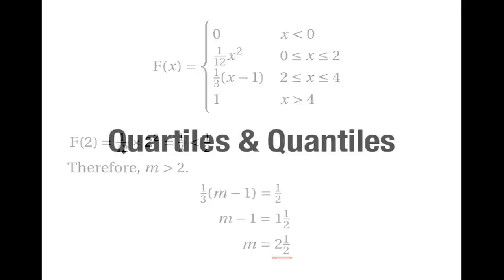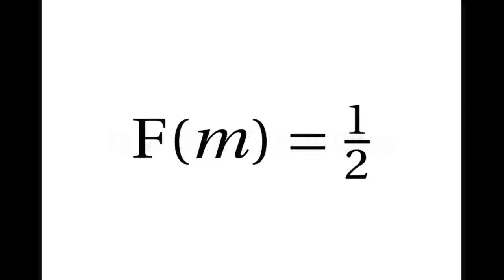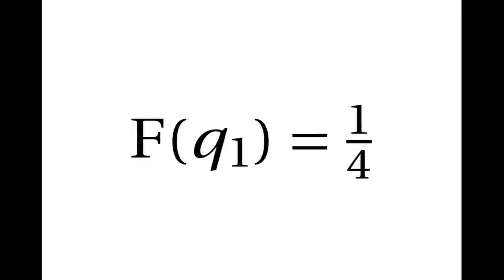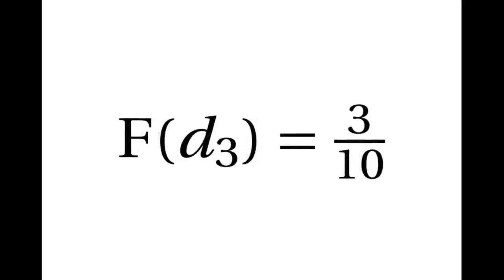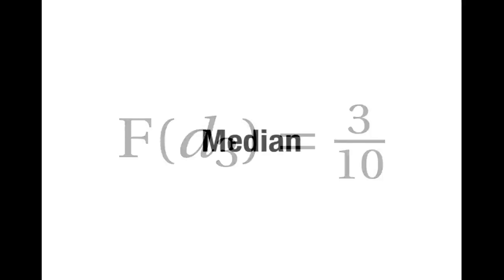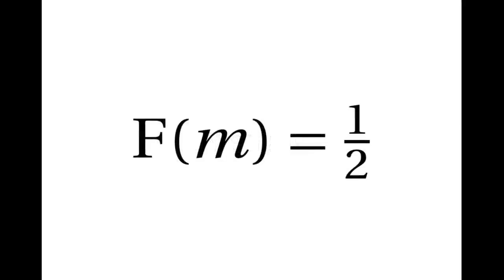That's three examples of finding the median of a continuously distributed random variable. To finish, let's talk about quartiles and quantiles more generally. The median is the solution of F(m) equals a half. You can find the lower quartile by solving F(q₁) equals a quarter, and the upper quartile by solving F(q₃) equals three quarters. For example, you could find the third decile by solving F(d₃) equals three tenths. The most important thing to remember is that the median is the solution of F(m) equals a half. Thank you very much for watching.